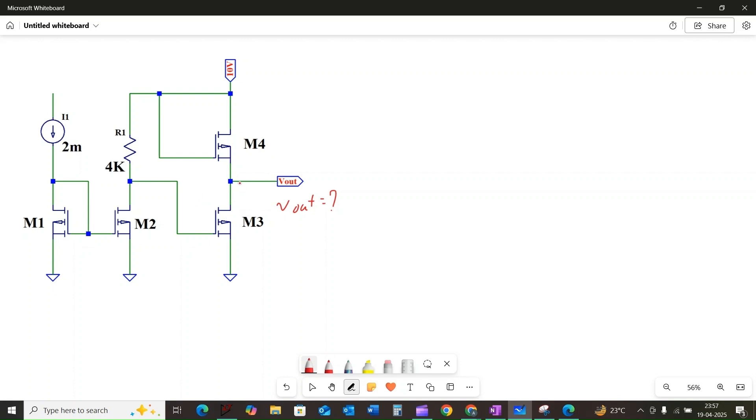First, we have a current mirroring on the left side. This is the current mirroring circuit. Notice this reference current IREF which is equal to 2 milliamps. Because the MOSFETs M1 and M2 are identical and connected in this current mirroring configuration, the current flowing through MOSFET M1, let us call it ID1, which is equal to IREF.